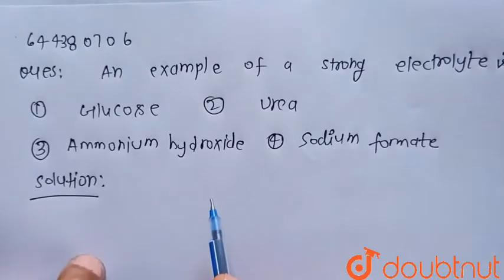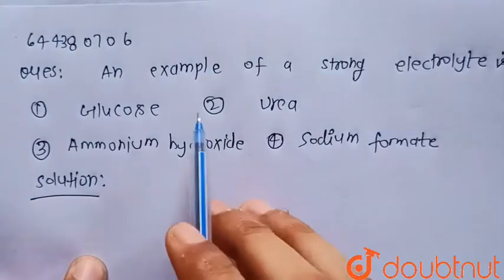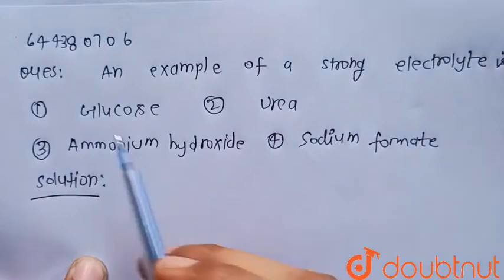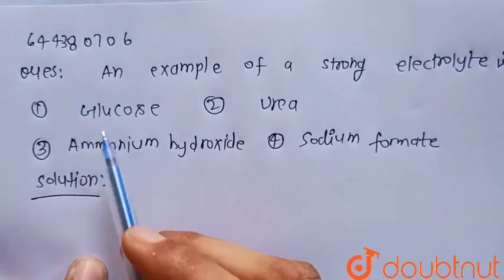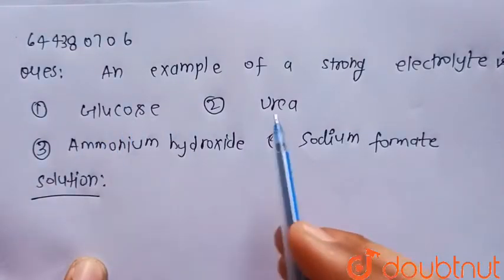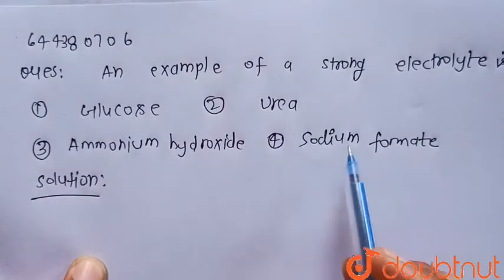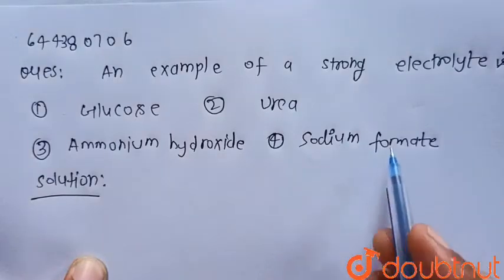Hello everyone, consider the given question: An example of a strong electrolyte is. The four options are: first, glucose; second, urea; third, ammonium hydroxide; and fourth, sodium formate.